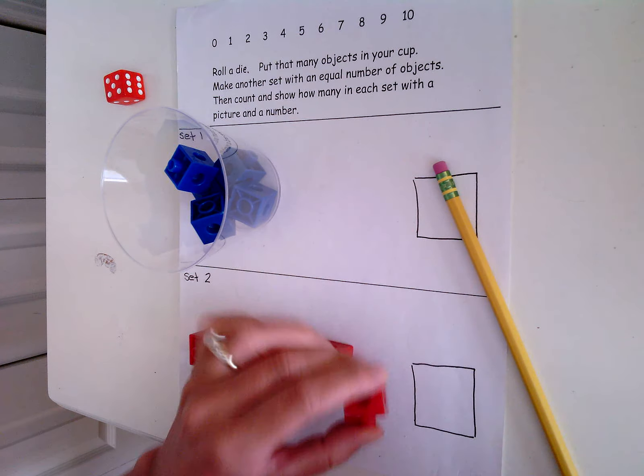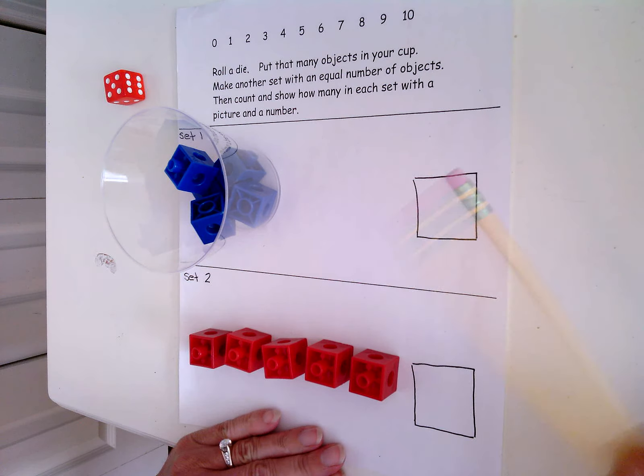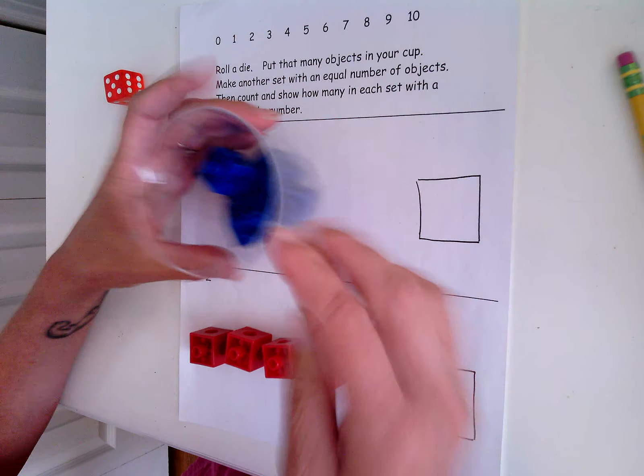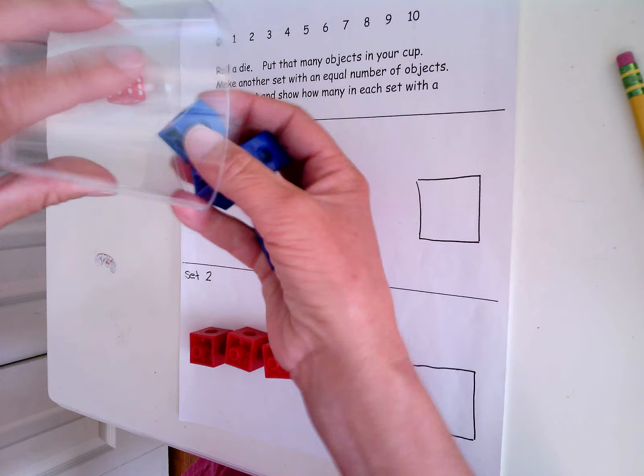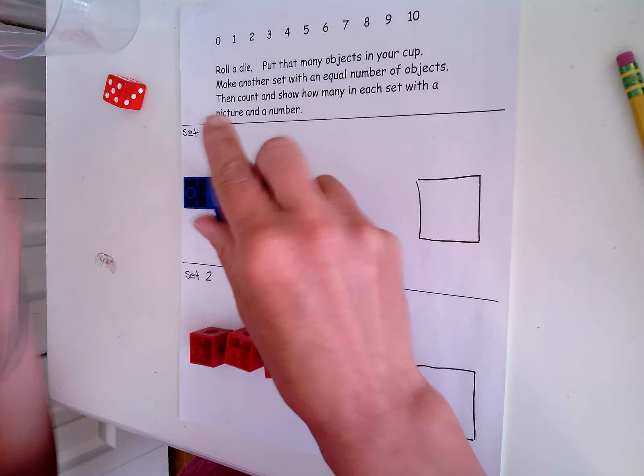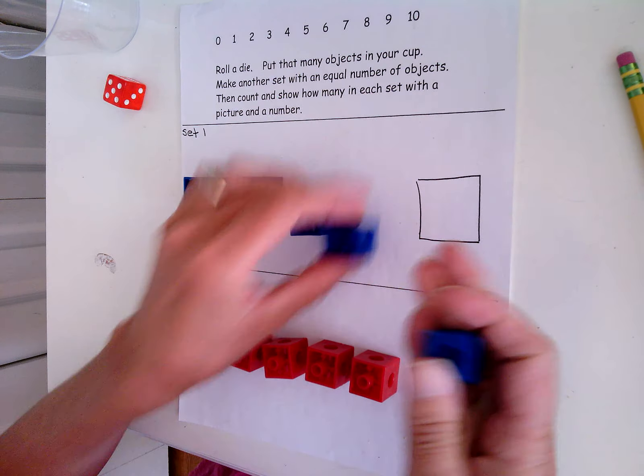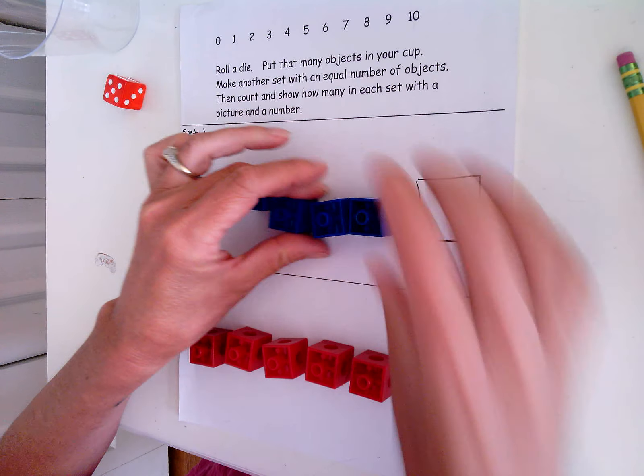So these two numbers are equal. They don't really look equal because one's in a cup and one's out, but what if I put these guys out as well? One, two, three, four, five. They are equal.